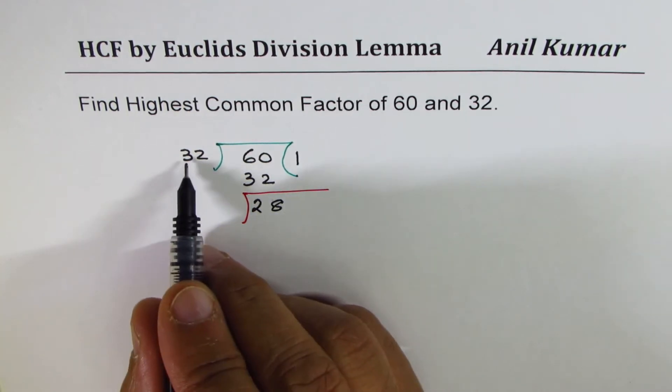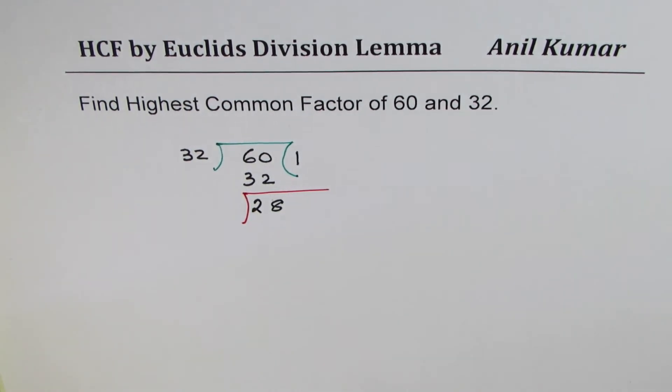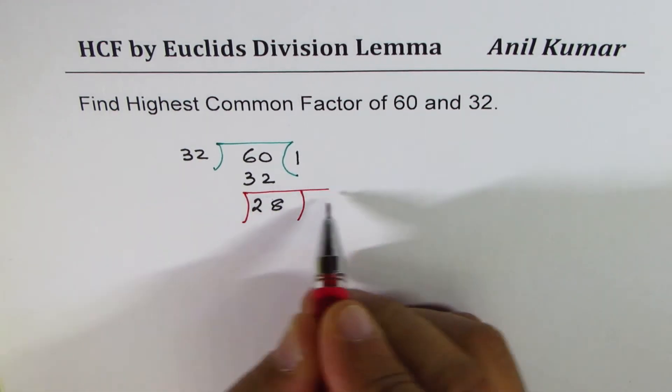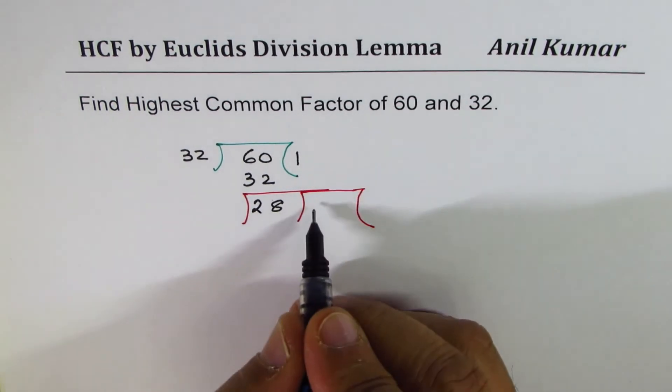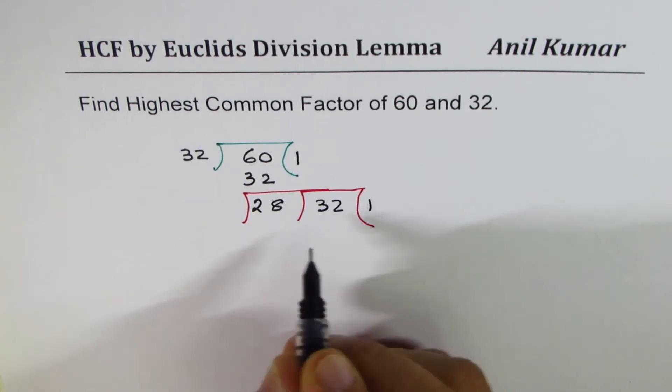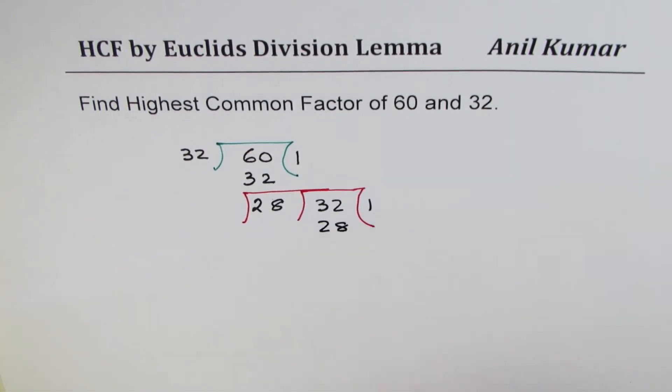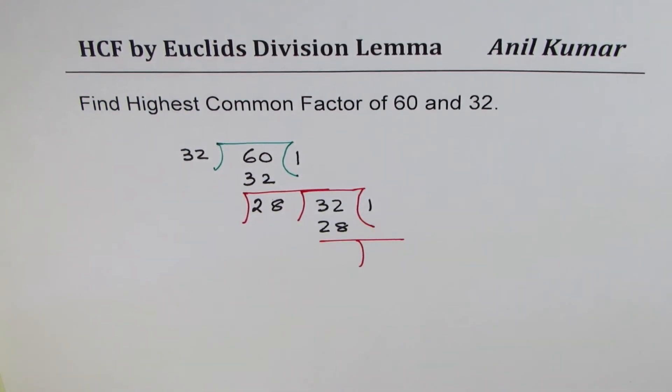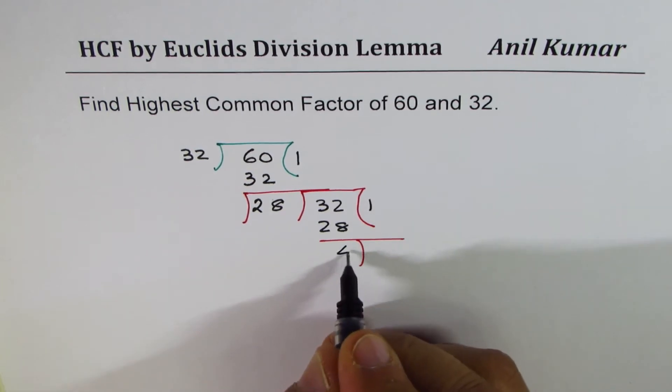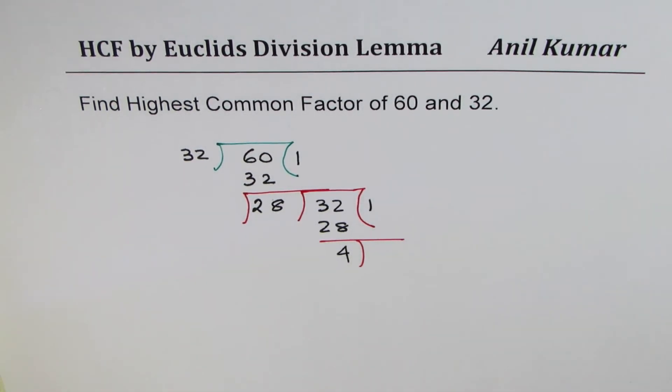Now, you have to divide the divisor, which is 32, by 28. So write 32 here. It goes one time, 28. The remainder now is 4. Divide 28 by 4.